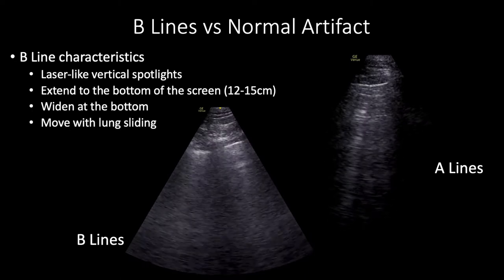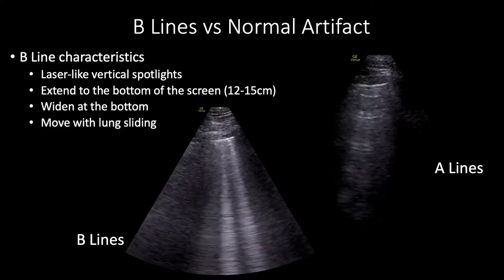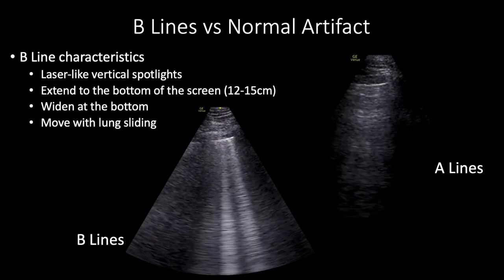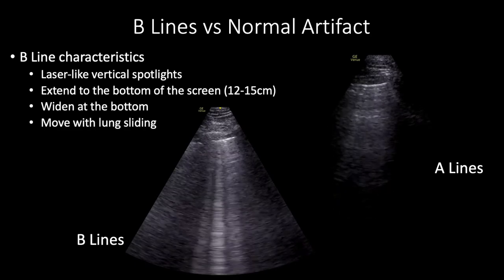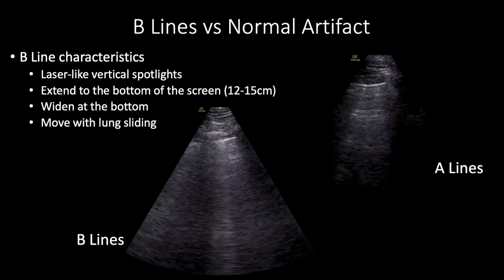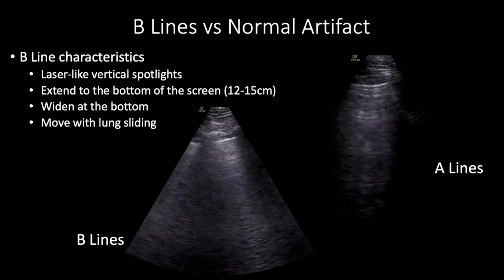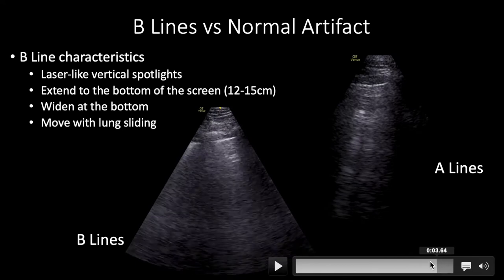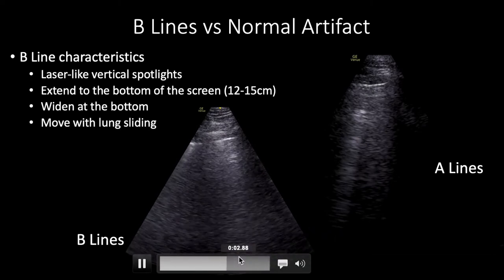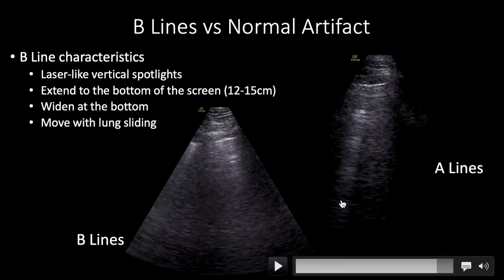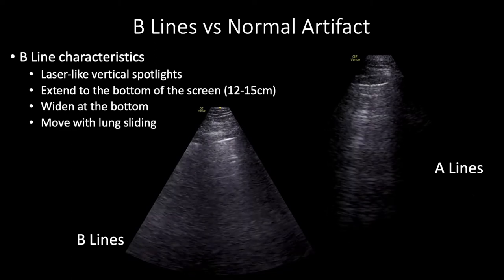Now let's make sure we can recognize B-lines versus normal artifacts. Characteristics of B-lines include laser-like vertical spotlights that extend to the bottom of the screen — which is why we set our depth at 12 to 15 centimeters — widening as they approach the bottom, and moving with lung sliding. You may wonder about a vertical line that appears in an image: if it doesn't reach the bottom of the screen and fades over time, that's a Z-line, just a normal artifact. True B-lines reach the bottom, widen, and become more prominent — these are pathologic.